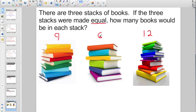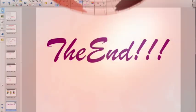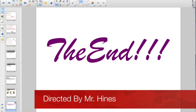9 plus 6 is 15, plus 12 more. Looks to me like I have 27 total books, right? And I'm making them all equal, so I better divide by how many numbers I added. I added 1, 2, 3 numbers. So 27 divided by 3. If I put them in 3 equal stacks, that means there would be 9 books in each stack. And I think that's all I have for you today.